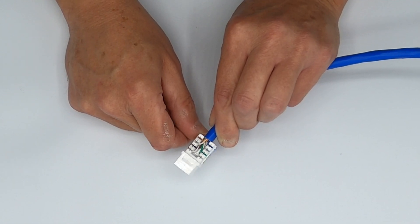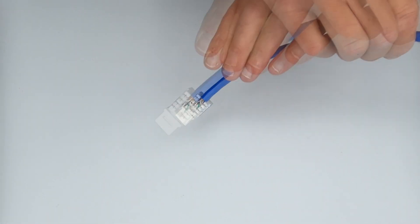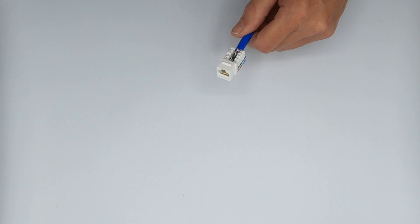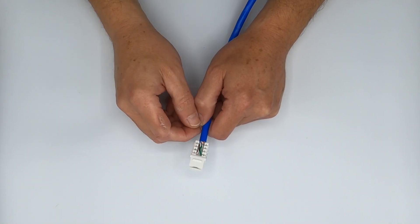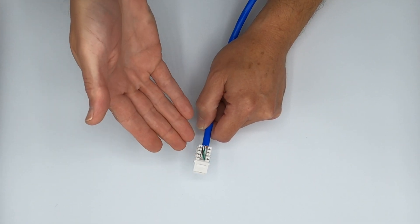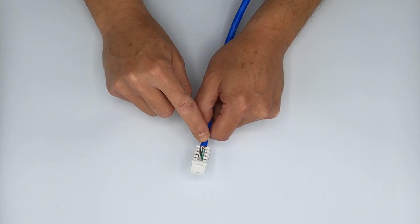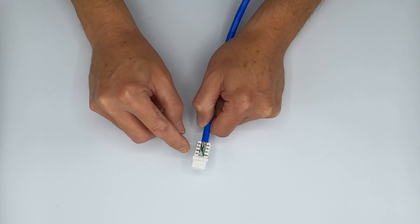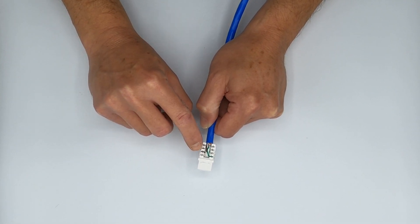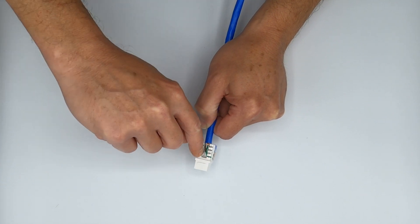But what happens if you don't terminate it right? Well, if you're looking for a 100 megabit per second connection or maybe a connection that doesn't work at all, then do it like this. I cut away four of the conductors for clarity here.